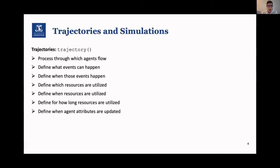The foundation of building DES models with SIMR are trajectories and simulations. Trajectories are defined by the trajectory function, and these represent the process through which the agents flow, which defines what events can happen, when those events happen, as well as which resources are utilized at certain places in the pathway and when that occurs, and as well as for how long those resources are utilized. And you can also define when certain agent attributes or variables are to be updated. This is really like your model structure.